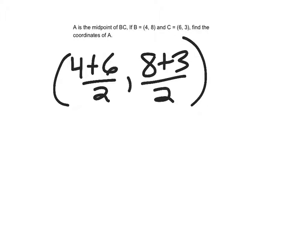So 4 plus 6, 10, divided by 2, I'll have 5. 8 plus 3 is 11, divided by 2, would be 5 and 1/2. So my midpoint would be 5, 5 and 1/2.